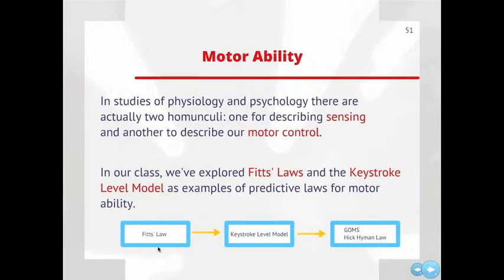The Keystroke Level Model aggregates that by saying pointing is just one of several operations, and then we can model all of these operations together. GOMS and Hick-Hyman's Law, which we'll look at in the cognitive model part of our lecture today, talk about how to structure these in the higher level cognitive sense.